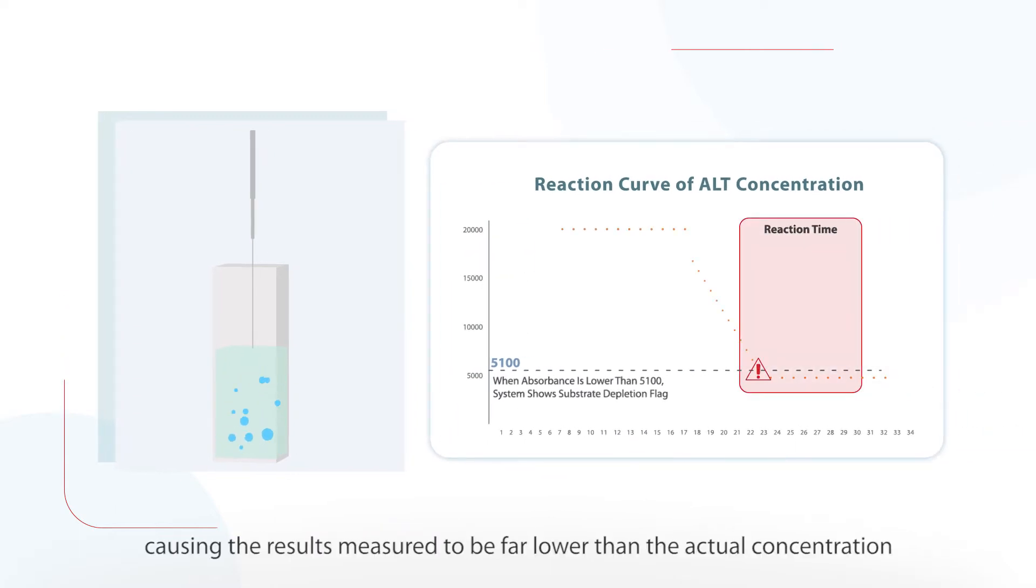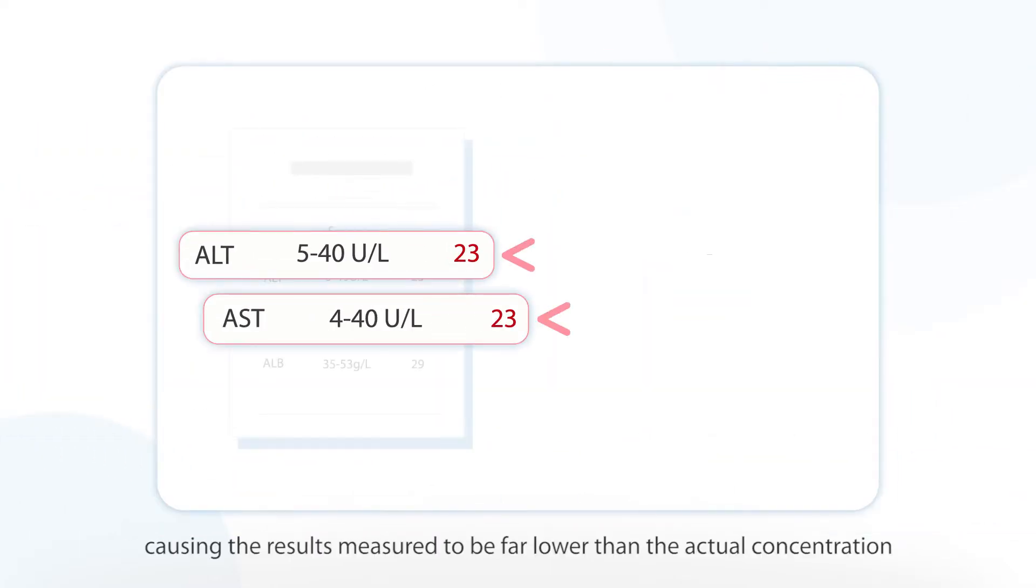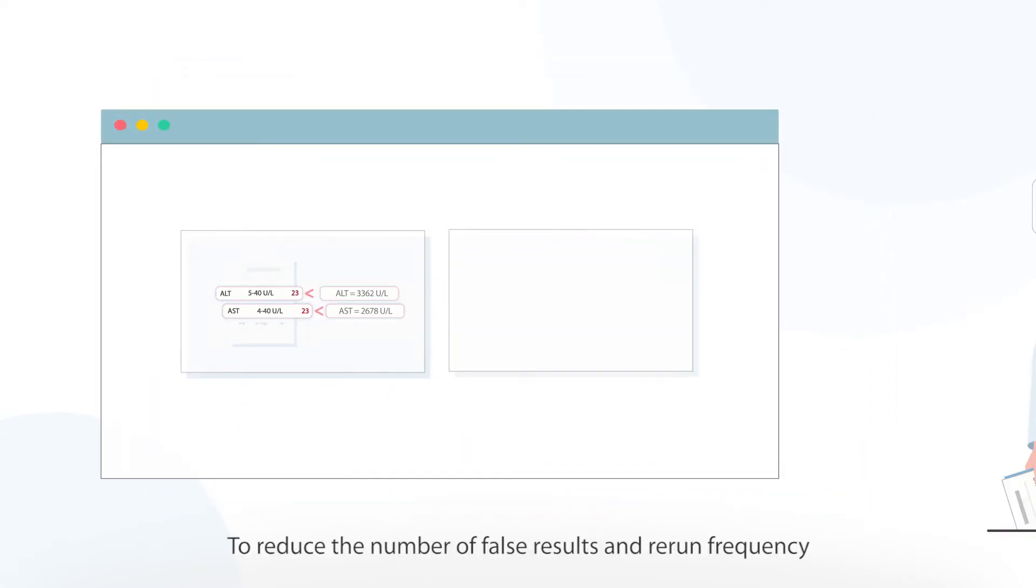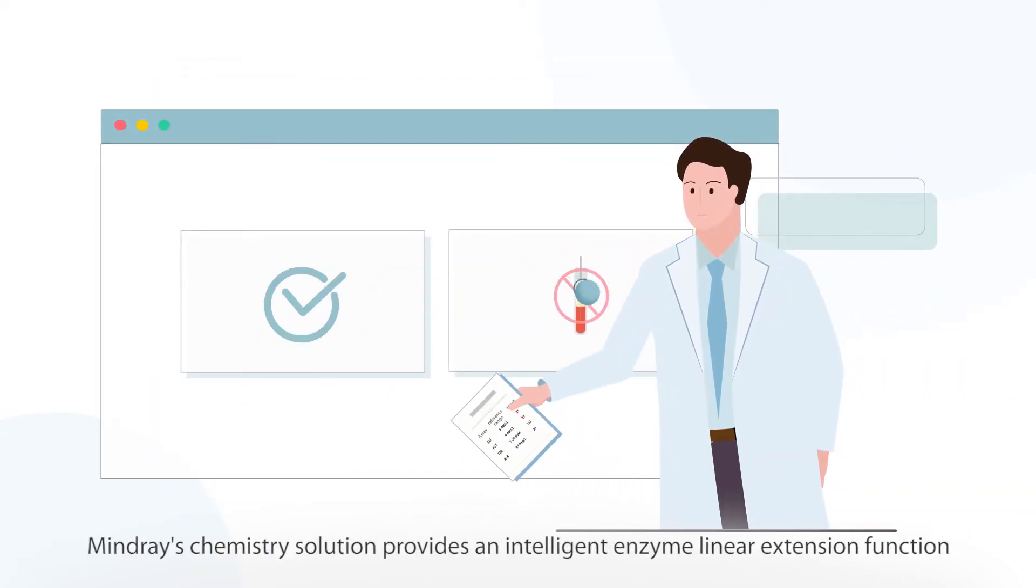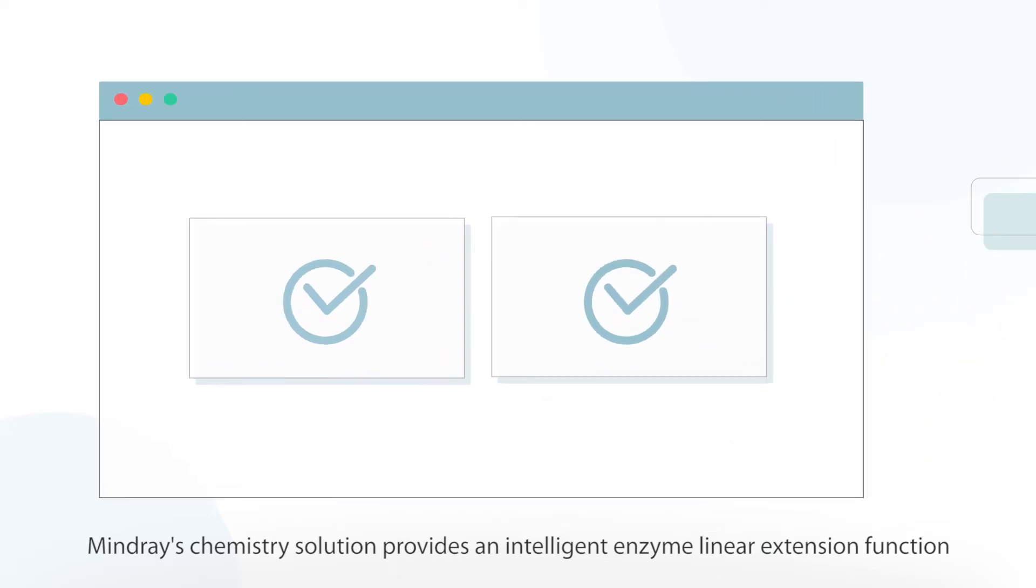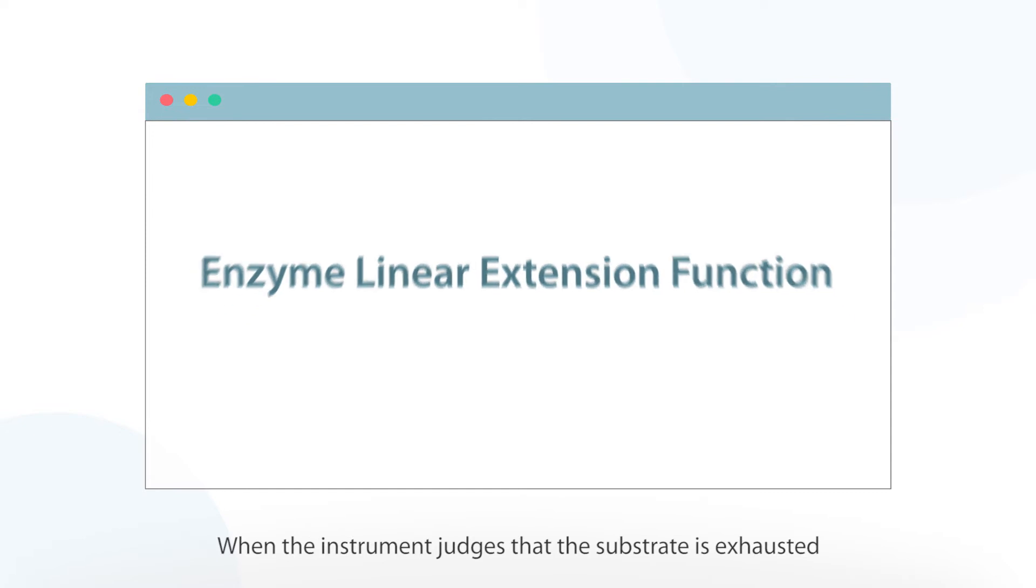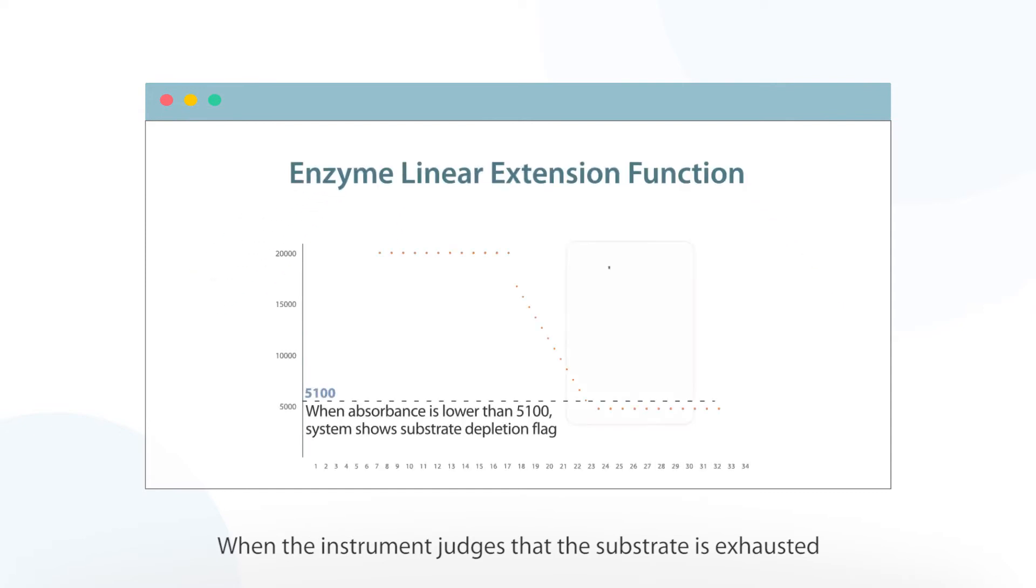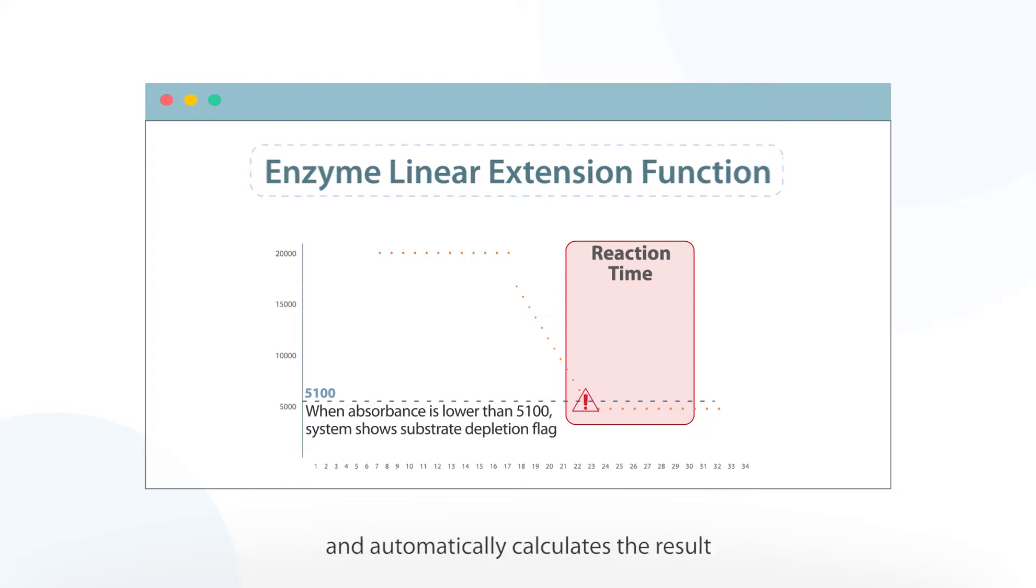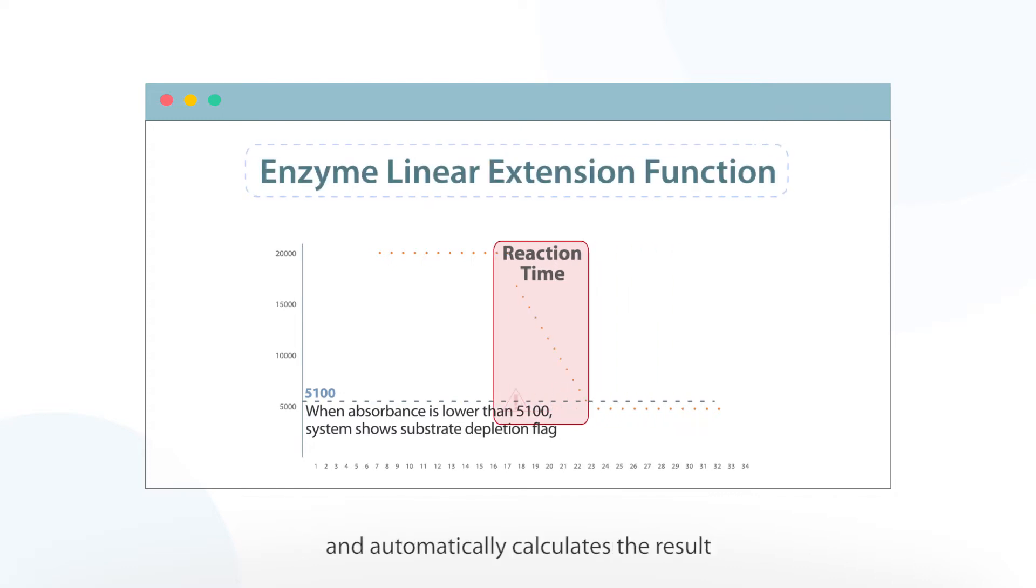This causes the results measured to be far lower than the actual concentration. To reduce the number of false results and rerun frequency, MindRay's chemistry solution provides an intelligent enzyme linear extension function. When the instrument judges that the substrate is exhausted, it starts the enzyme linear extension function and automatically calculates the result using the absorbance point in the linear change.